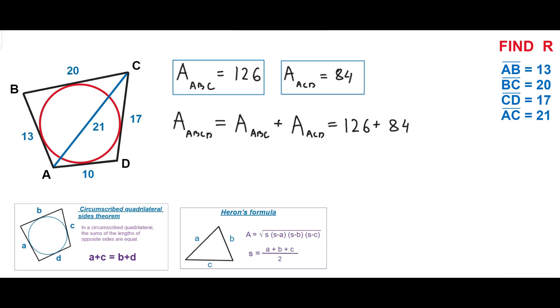The area of quadrilateral ABCD equals the area of triangle ABC plus the area of triangle ACD = 126 + 84 = 210.